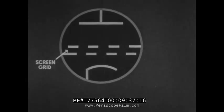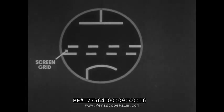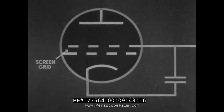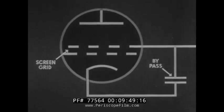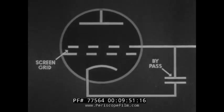To shield the control grid, another grid known as the screen grid may be added to the triode tube. A condenser connects the screen grid to the cathode circuit. This bypass condenser enables the screen grid to electrically isolate the plate and control grid.